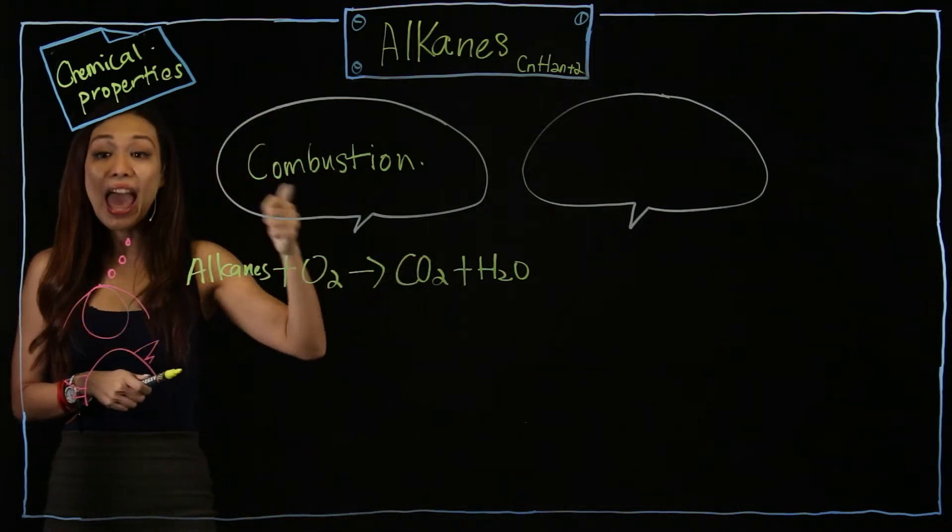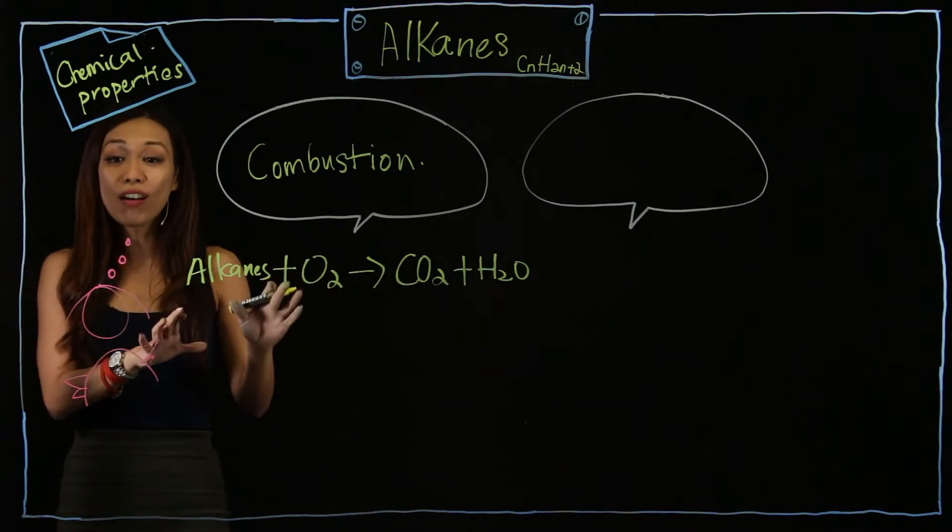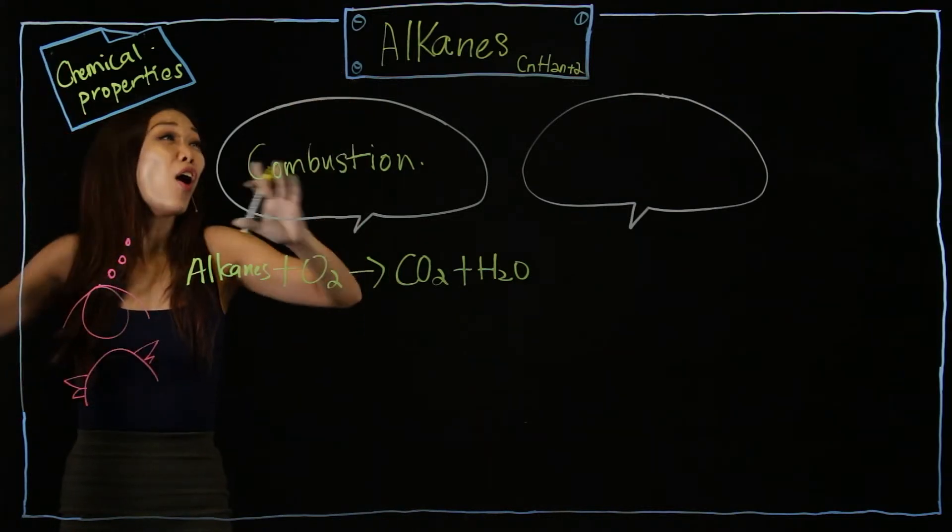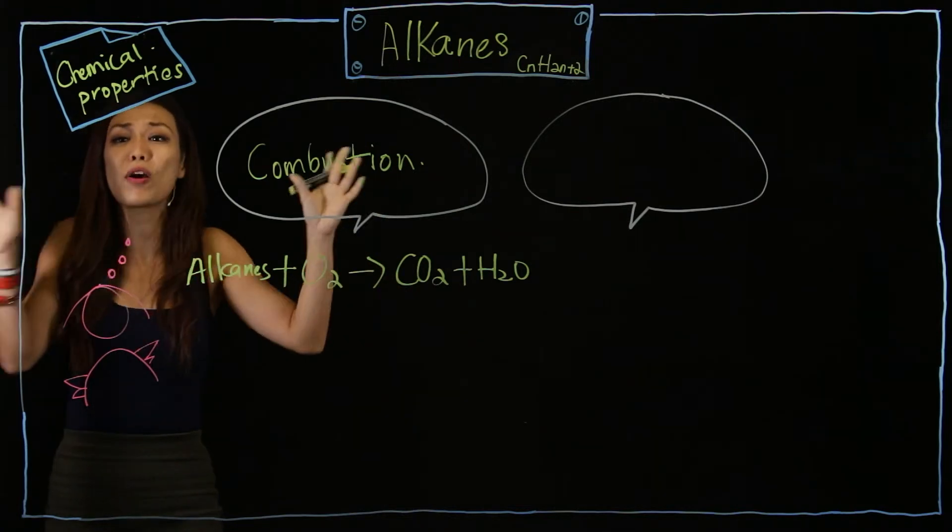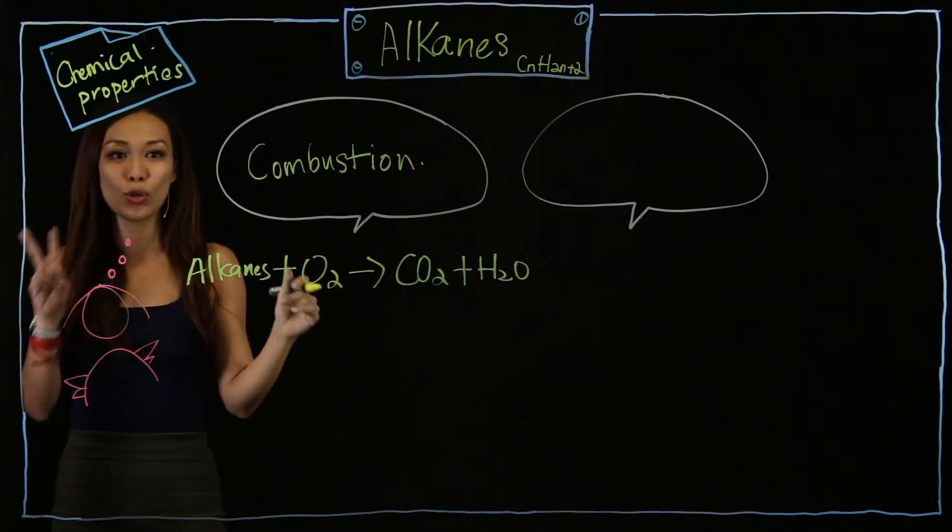whether you're alkanes, alkenes, alcohol or carboxylic acid, as long as you are organic, all of them will go through this process called combustion. And they will always have two products.